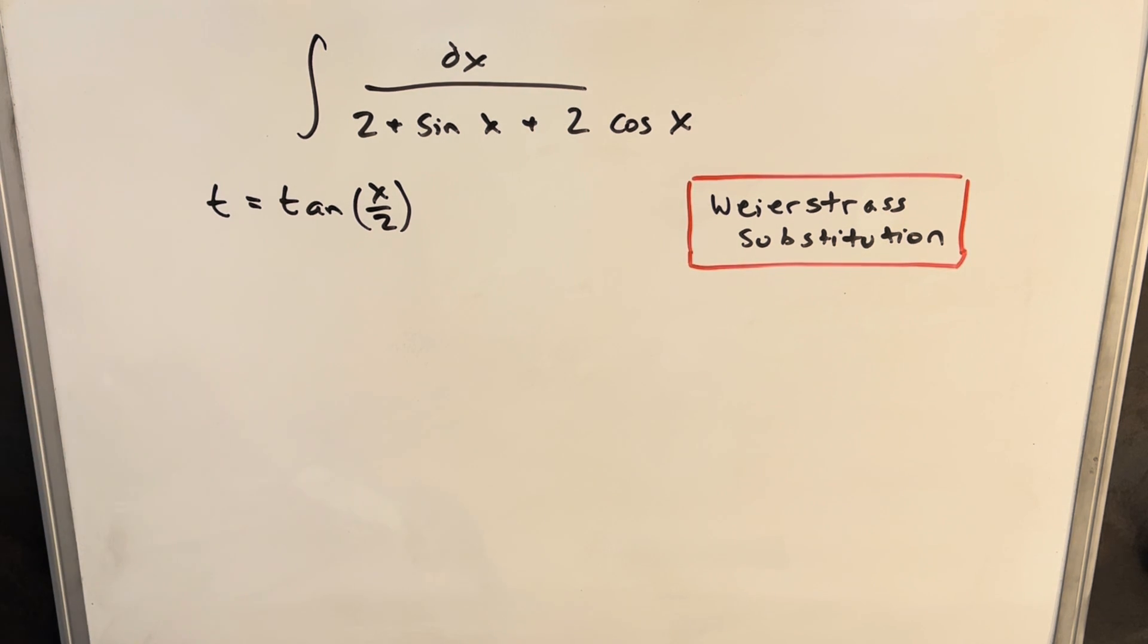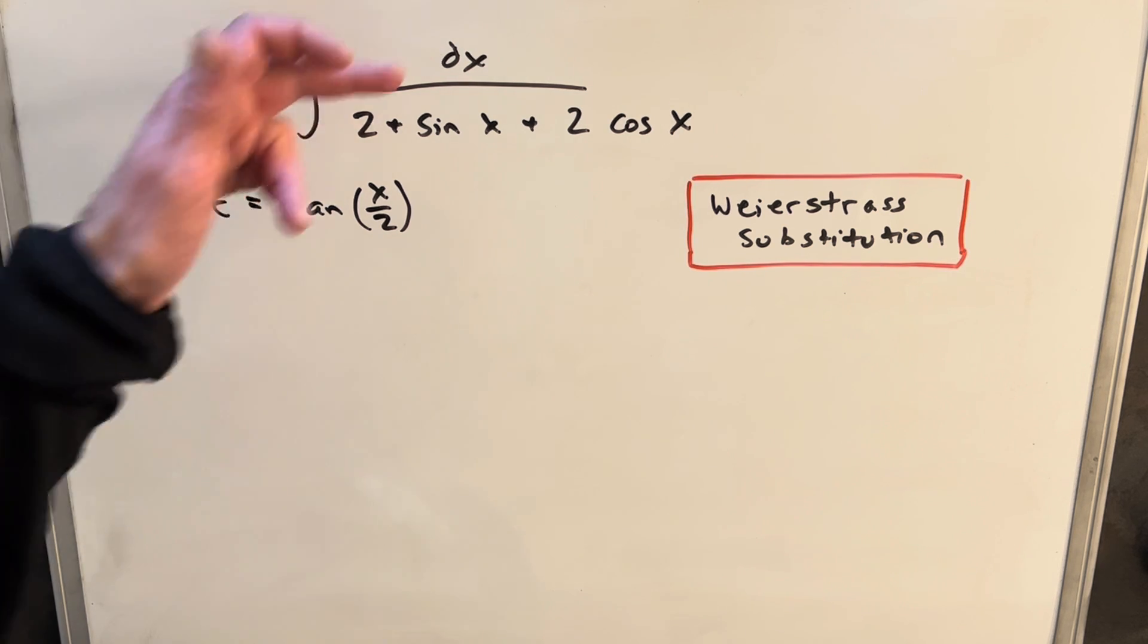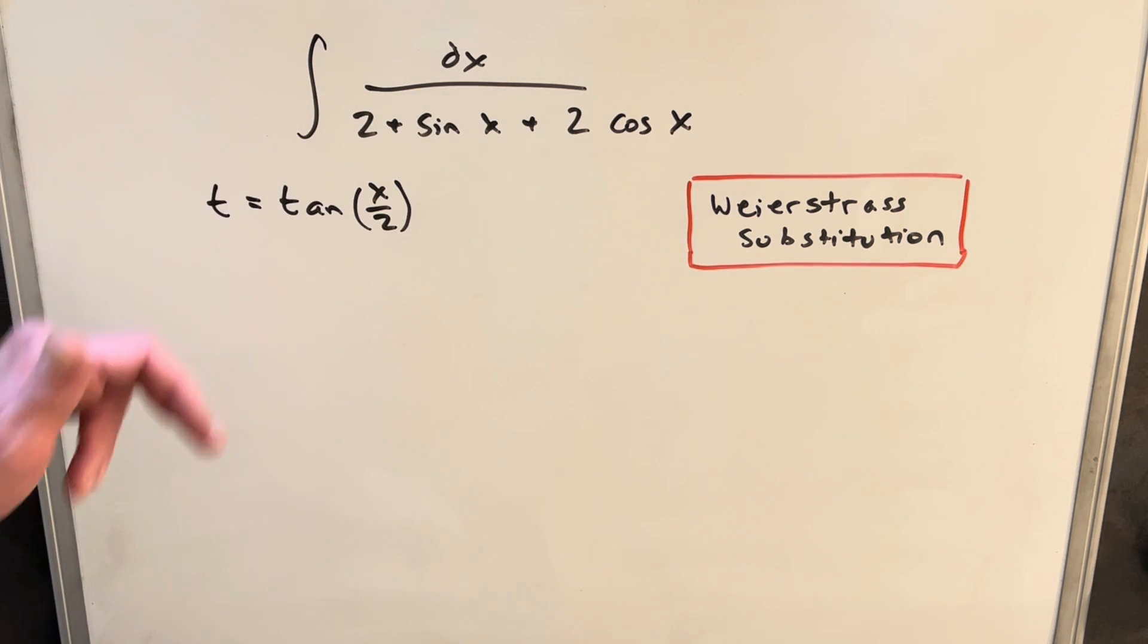Okay, so now that we've made the substitution, we've got to figure out how do we actually use this. What's our dx going to be? What is sine x going to be? What is cosine x? What are we going to do from here?